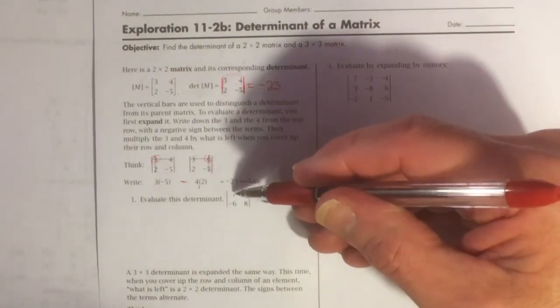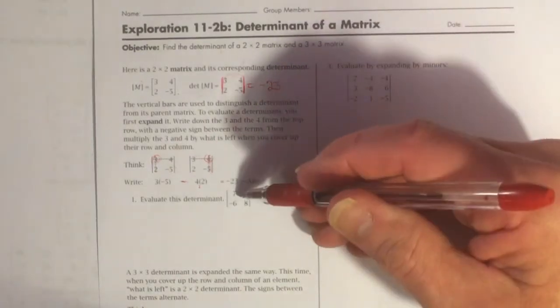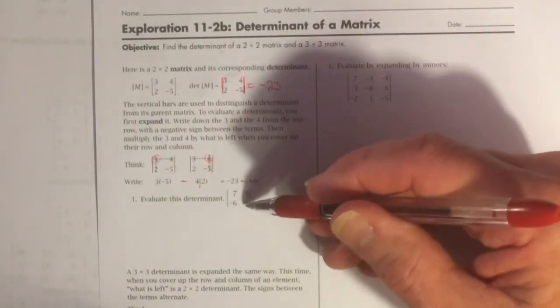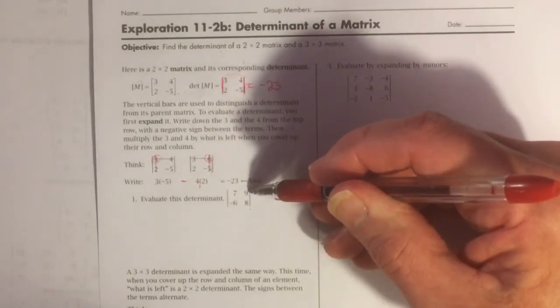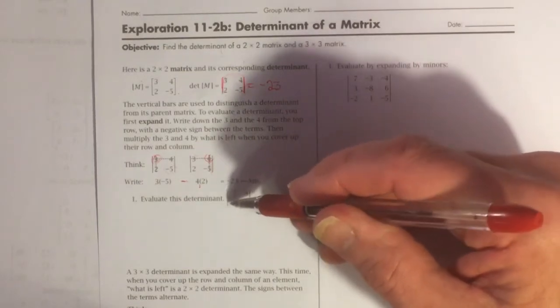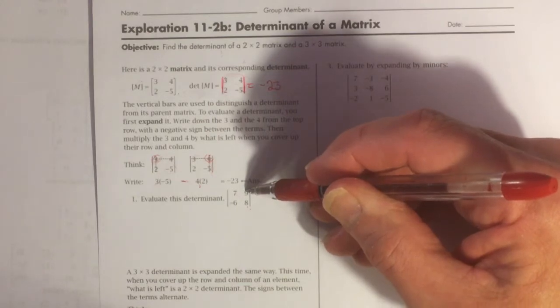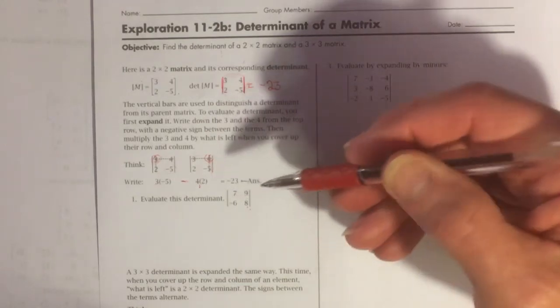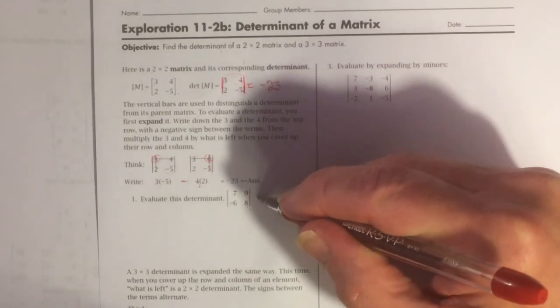We could do this one easily the way we did this one a few minutes ago. 7 times 8 is 56. Negative 6 times 9 is negative 54. If I'm subtracting them, 56 minus a negative 54, I think that's 110. So this should be 110.